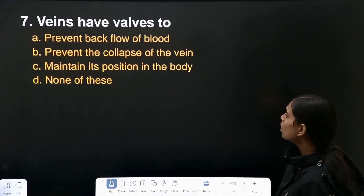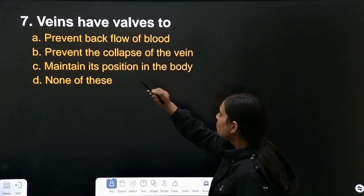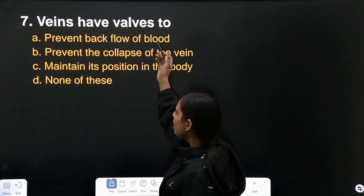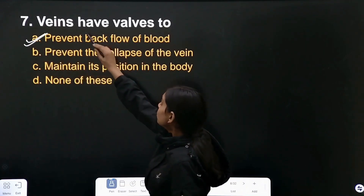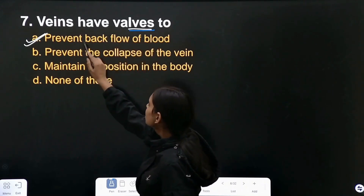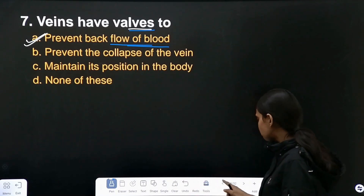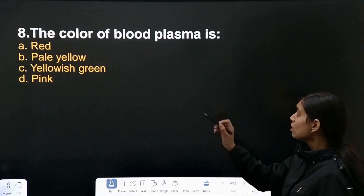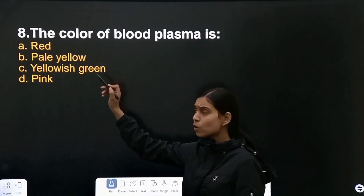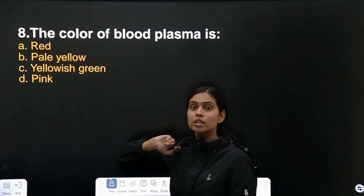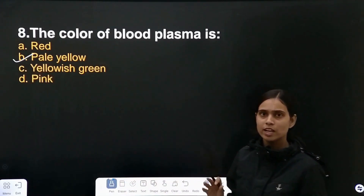Veins have valves to prevent backflow of blood — yes, that is the correct answer. Veins have valves because they prevent backflow. The color of blood plasma is pale yellow — yes, the correct answer is pale yellow.